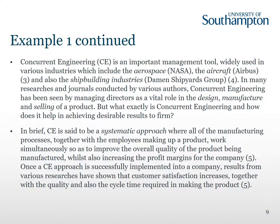Having mentioned concurrent engineering in the previous paragraph, it now goes on to explain what it is and state its importance. Halfway down the first paragraph it says 'in many researches and journals conducted by various authors' — that phrase is very wordy and unnecessarily so, and could be written more directly. They've also made the claim about 'various authors' but there isn't any referencing to support that claim.